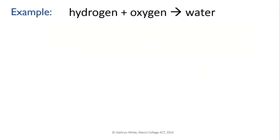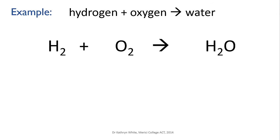Let's take a simple example: the combustion of hydrogen in oxygen to produce water. First, let's write out the formulae of the substances. We know that hydrogen and oxygen are part of the diatomic sevens, so we can write them as H2 and O2, and water is H2O. Now let's draw some diagrams of our molecules so it's easy to see the individual atoms. We'll draw a hydrogen molecule and an oxygen molecule — you can see each of them is made of two atoms bonded together.